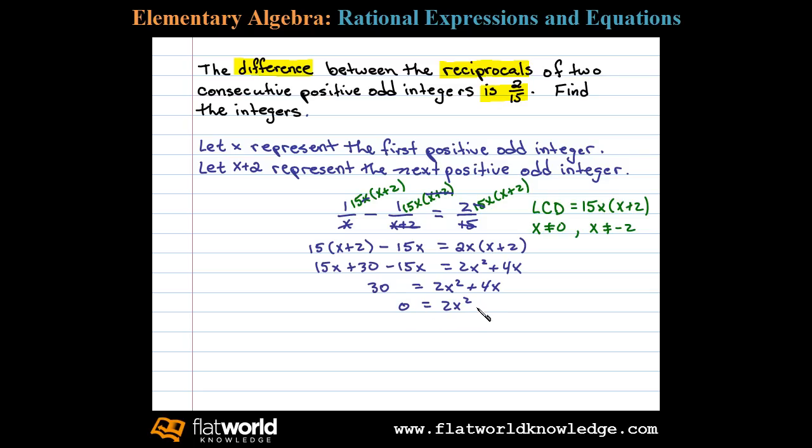Subtracting 30 on both sides, we have 2X squared plus 4X minus 30, and the equation is in standard form. Notice there's a GCF. Let's factor out a 2 first, leaving us with X squared plus 2X minus 15.